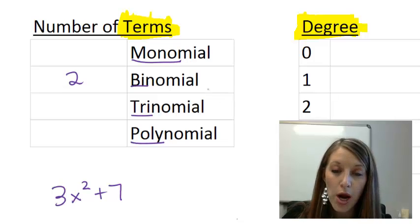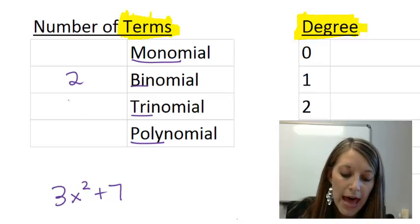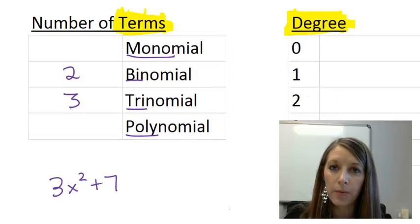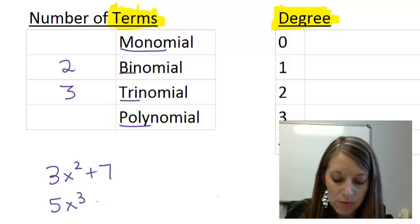Moving on to trinomial, like a tricycle has three tires, a trinomial has three terms to it. So an example of that might be like 5x cubed minus 2x plus 14.